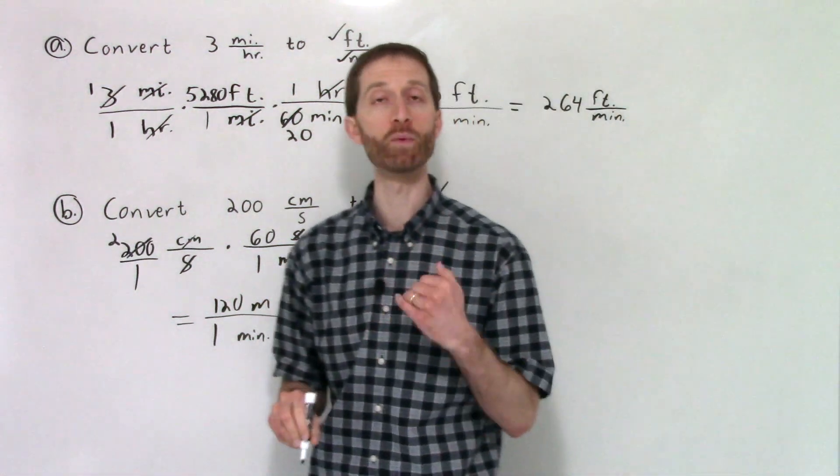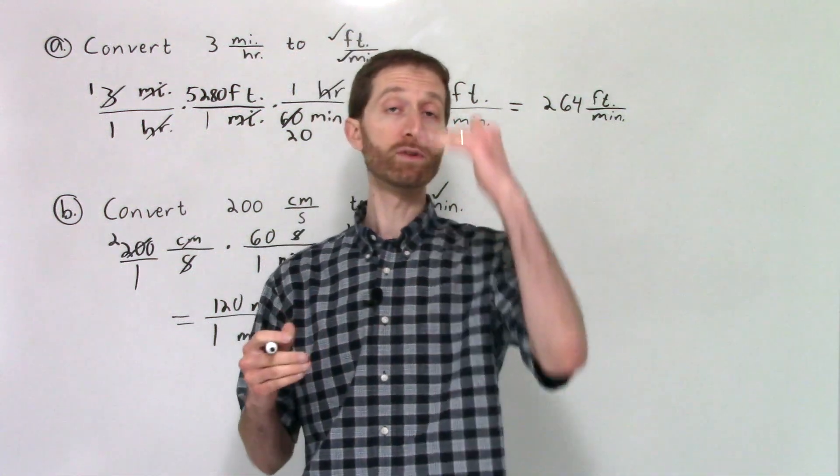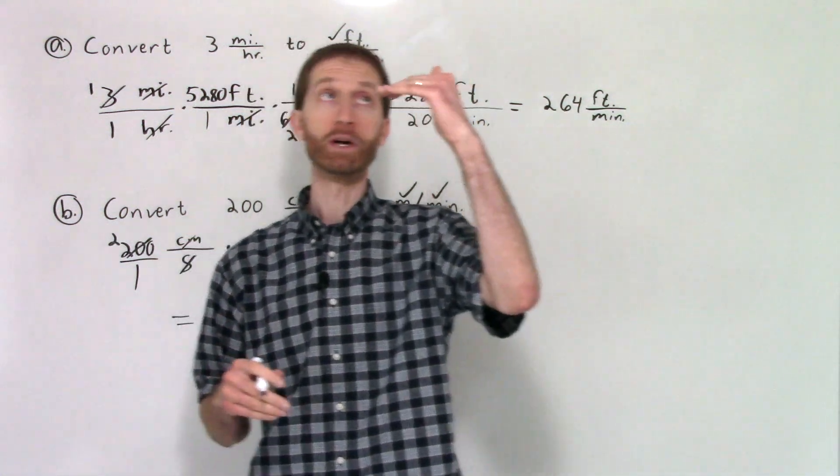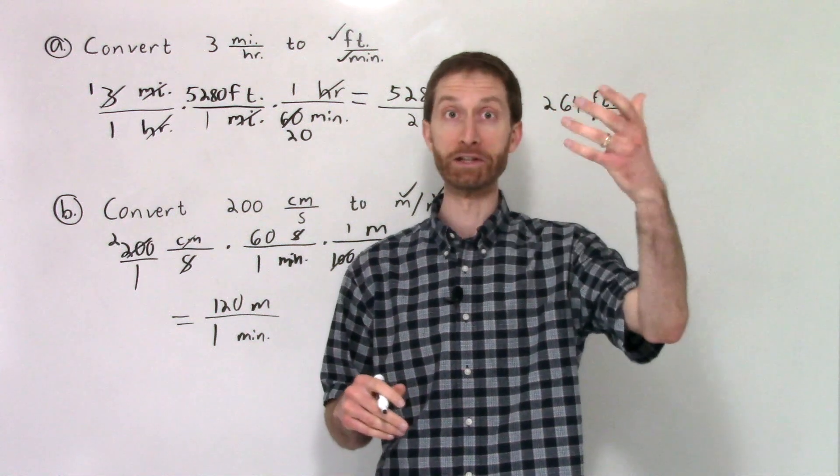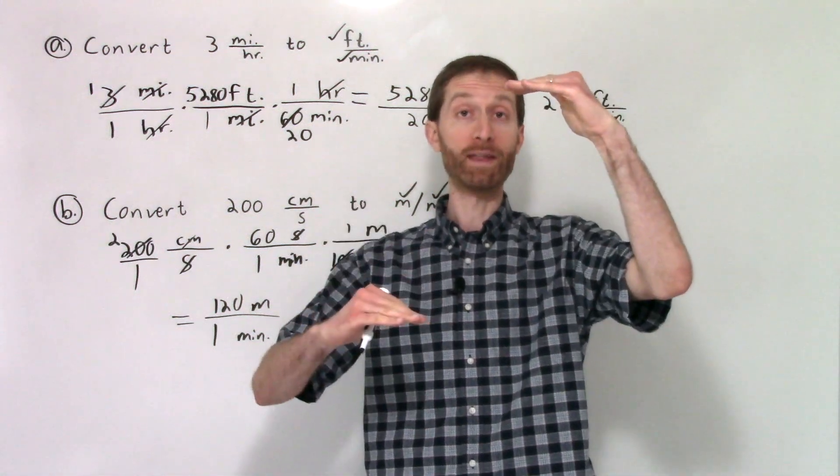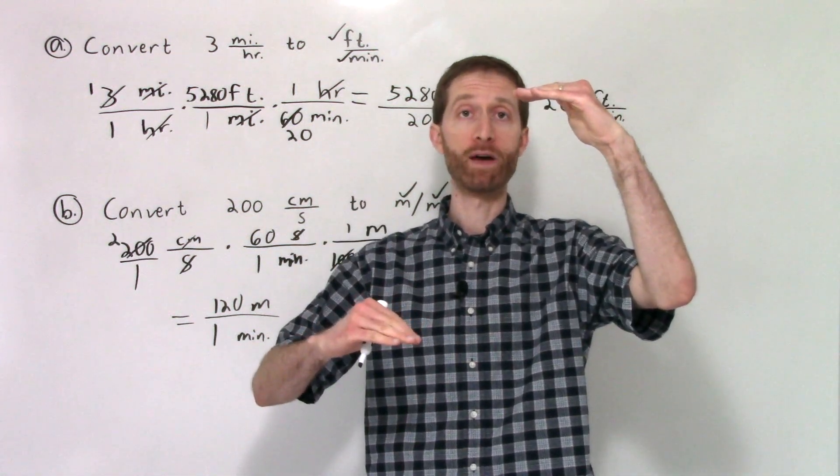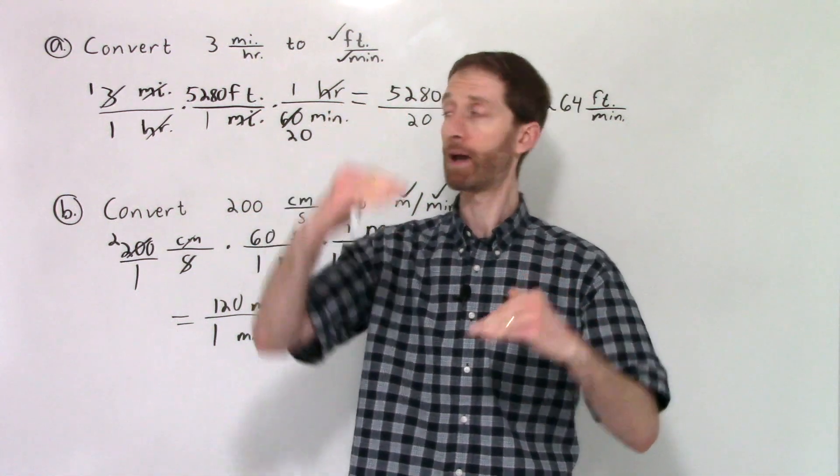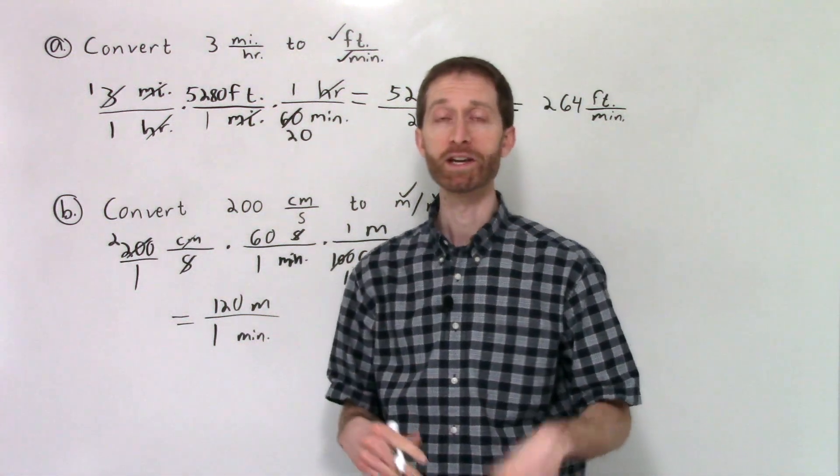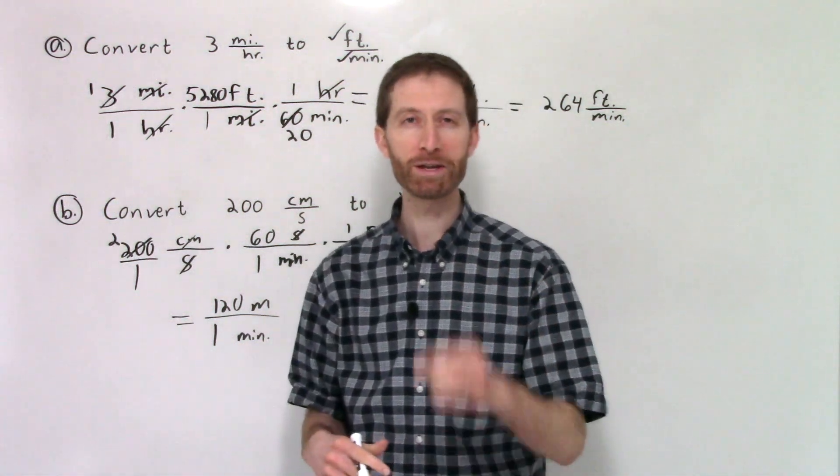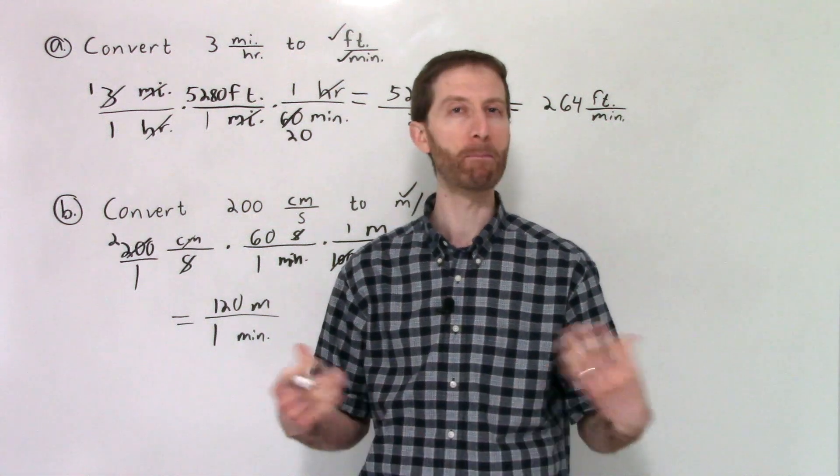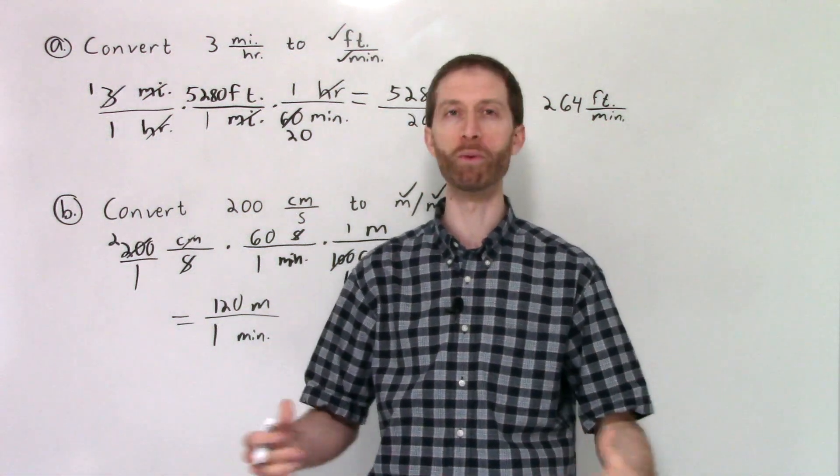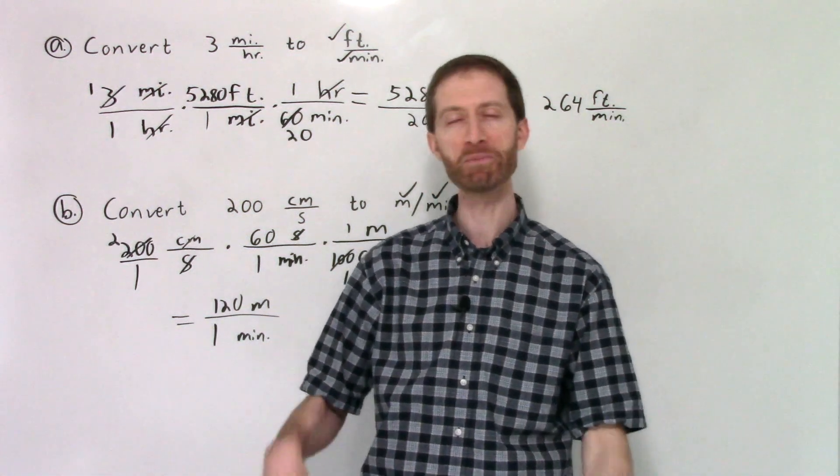So again, let your units lead the way here. If you've got a unit in the numerator that needs to be taken care of, deleted, then you need to divide by that unit in the next step. If you have a unit in the denominator that needs to be taken care of, you need to multiply by that unit in the next step. As I've illustrated in these problems, they're complicated looking, but cleaning it up one piece at a time makes these problems so doable and kind of satisfying in a numerical kind of way.